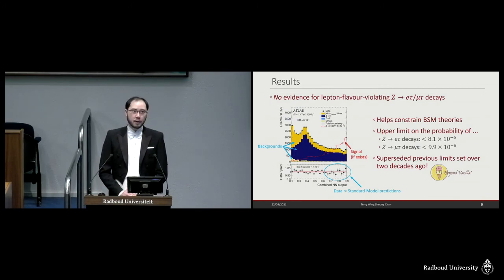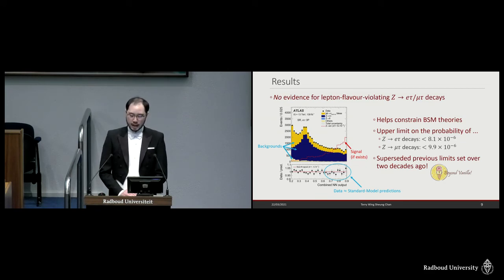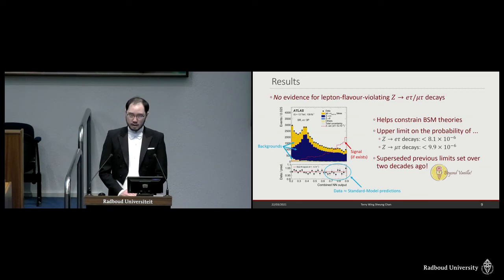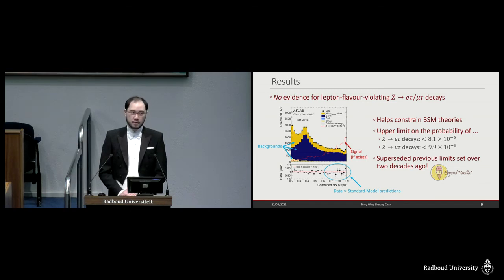So the results of the analysis are that, slightly disappointingly, there is no evidence for lepton flavor violating Z decays. However, in science, even if we couldn't find evidence for something, that is still very important results. In this case, it helps us constrain beyond the standard model theories. With my analysis, I was able to set stringent upper limits on the probability of these decays, which have superseded limits from previous experiments that were set over two decades ago.